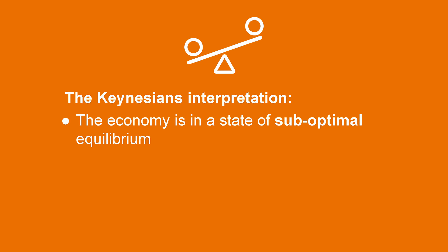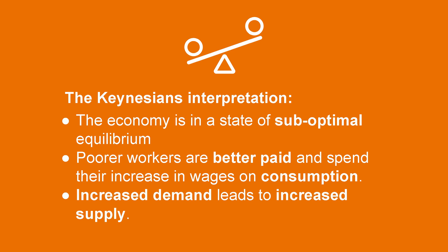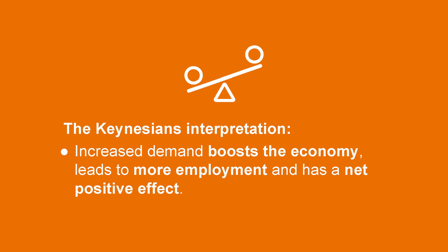For Keynesians, the initial economy is in a state of suboptimal equilibrium — demand is insufficient, and as a consequence supply is too low. The introduction of a minimum wage means that poorer workers are now better paid. They spend this increase in wages on consumption, which means increased demand, which will mean increased supply. All this boosts the economy, which in turn has a positive effect on employment.